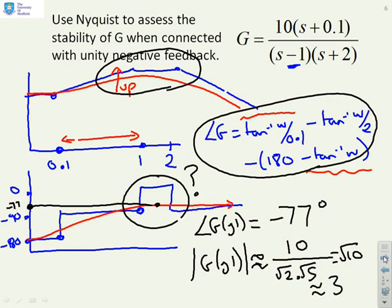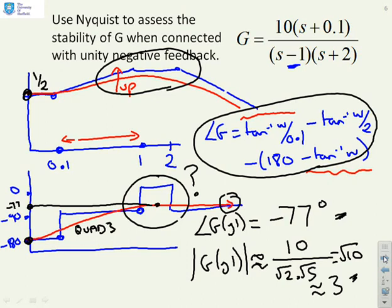Summarising before drawing the Nyquist plot: the starting point is 1 over 2, which is one half, and the starting phase is minus 180 degrees. Later we have the point minus 77 degrees at gain 3. Asymptotically we come back to minus 90 degrees. So the phase goes first through quadrant 3 and then into quadrant 4, approaching the origin in the minus 90 degree direction, while the gain initially goes up and then returns to zero.